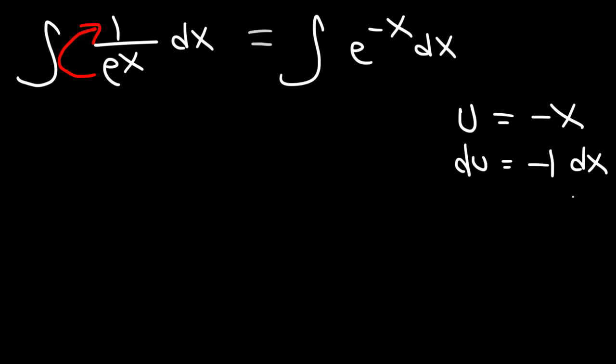Now if we multiply both sides by negative 1, we can see that dx is equal to negative du. So let's replace negative x with the u variable, and let's substitute dx with negative du.